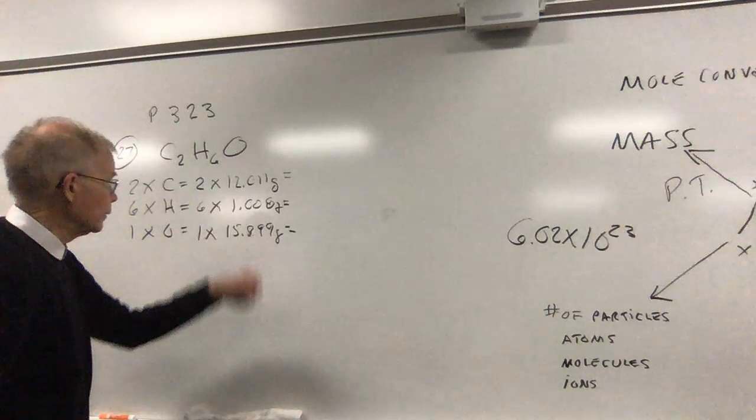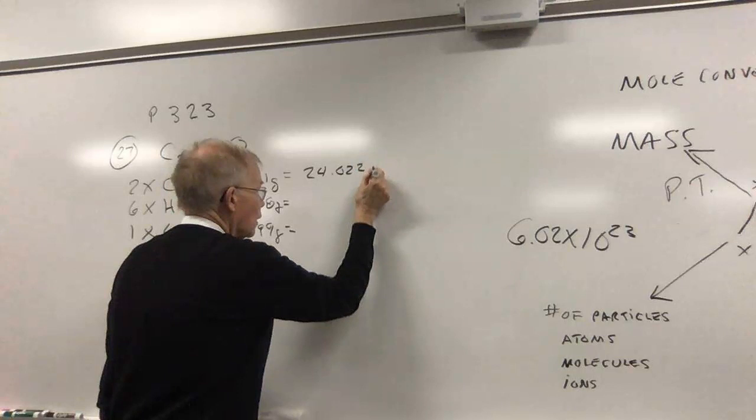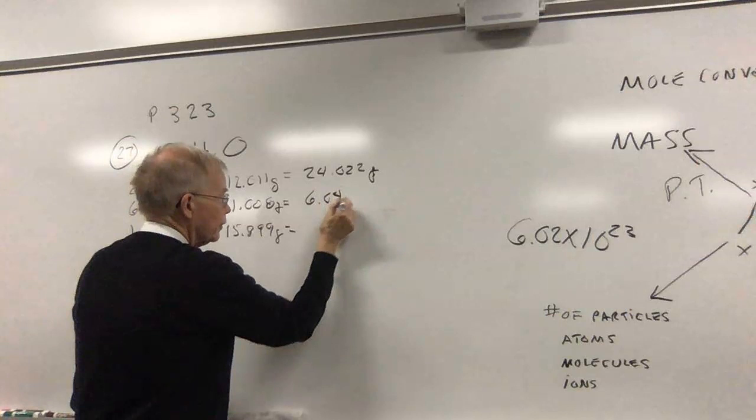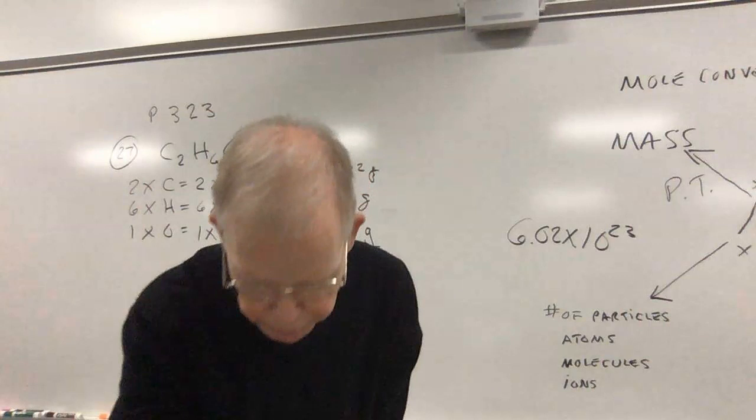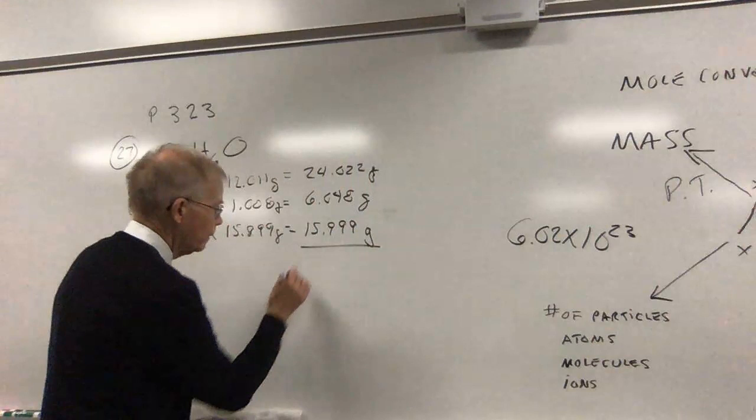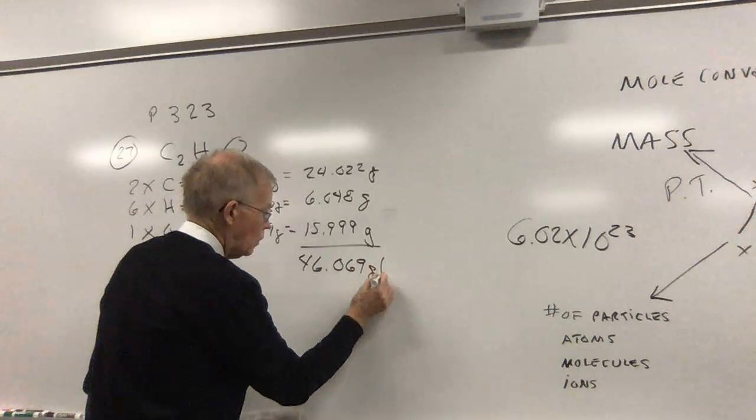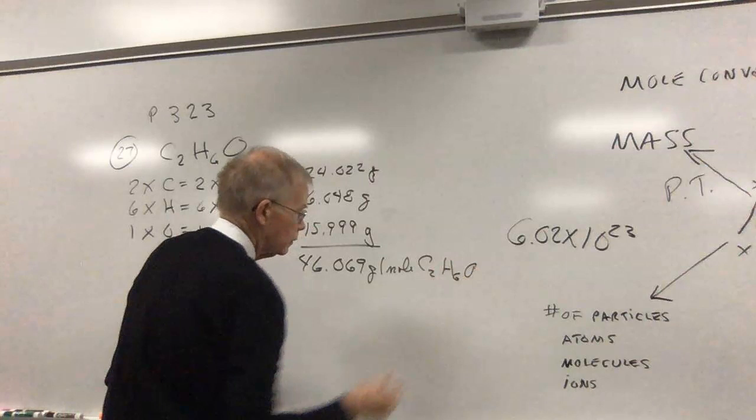Multiplying on through: 24.022 grams for the carbon, hydrogen 6.048 grams, and my oxygen just comes down as 15.999 grams. I add them all up, and my answer turned out to be 46.069 grams per mole of C2H6O.